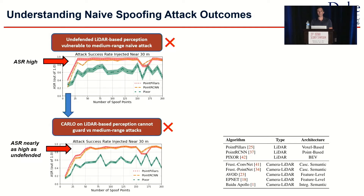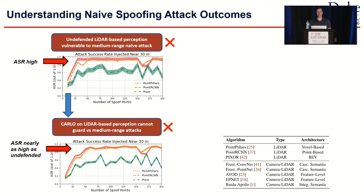One of the most popular defenses against LiDAR-based spoofing is CARLO, which was shown to guard perception against close-range attacks using physics-based assumptions about how vehicles should appear in a natural environment. By extending our analysis of naive attacks out to medium range, we were able to show that the CARLO defense does not perform as well at medium range as it does at close range — the attack success rate is nearly as high at medium range as at close range.